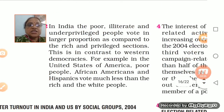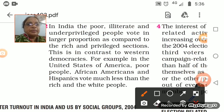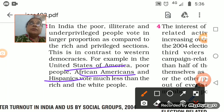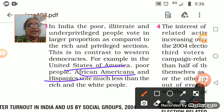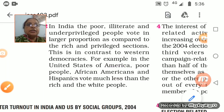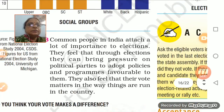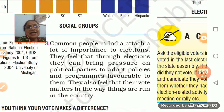In the United States, poor people, African Americans, and Hispanics — the tribal group who are inhabitants of America — go for less voting. They don't go much for voting. Rich people and white people are more interested in going for voting.